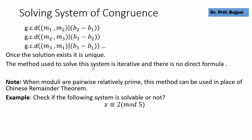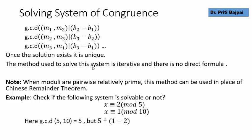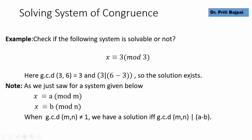Let's see some examples to check whether a system is solvable. If we have x ≡ 2 mod 5 and x ≡ 1 mod 10, then GCD(10,5) = 5, and 5 does not divide the difference 1−2. So the solution does not exist. In another example with x ≡ 3 mod 3 and x ≡ 6 mod 6, GCD(6,3) = 3 and 3 divides 6−3. So the solution exists.